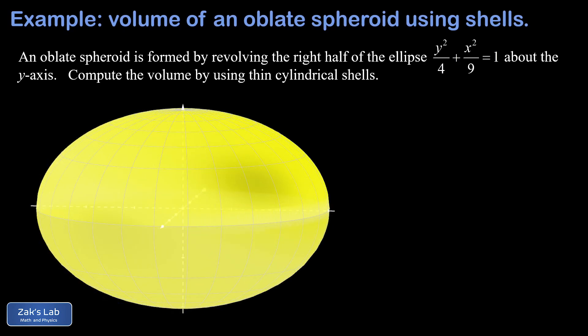There's the oblate spheroid generated by our ellipse. This thing has semi-major axes of length 3 and a semi-minor axis of length 2, where those semi-major axes are in the x and y directions and the semi-minor axis of length 2 is in the z direction. So it's sort of a flattened sphere.